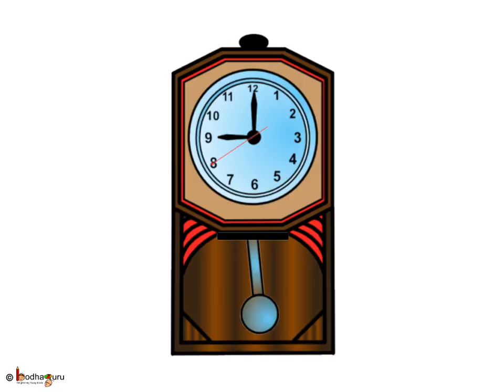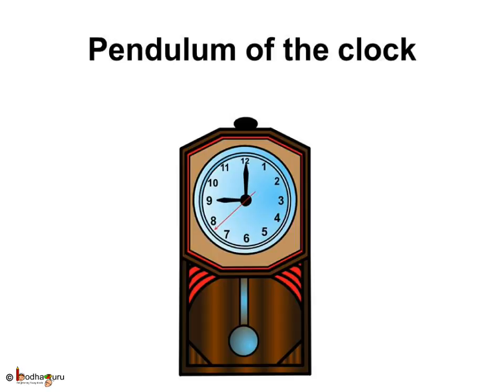The regular motion of the pendulum controls the motion of the hands of the clock. As the pendulum completes one oscillation, it moves the gear by one notch and the gear then moves the hands of the clock.